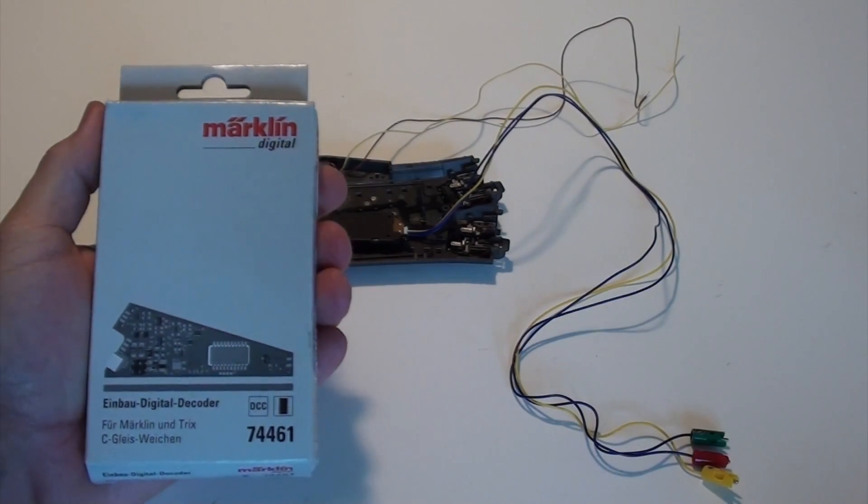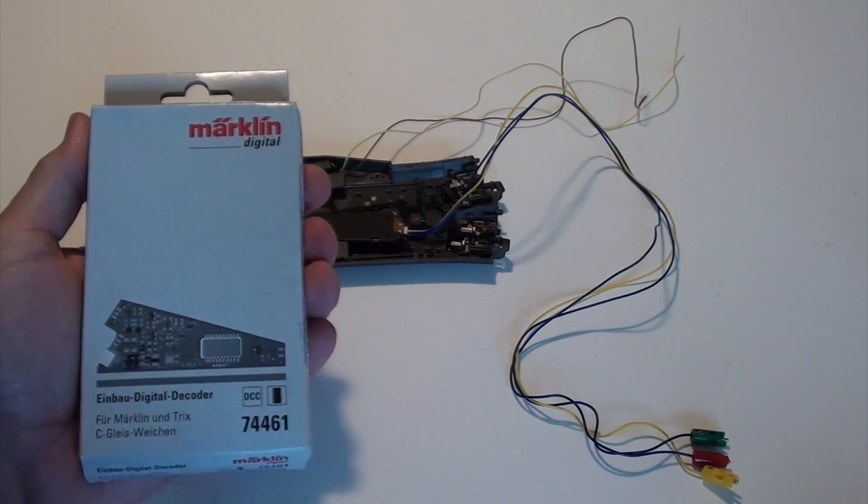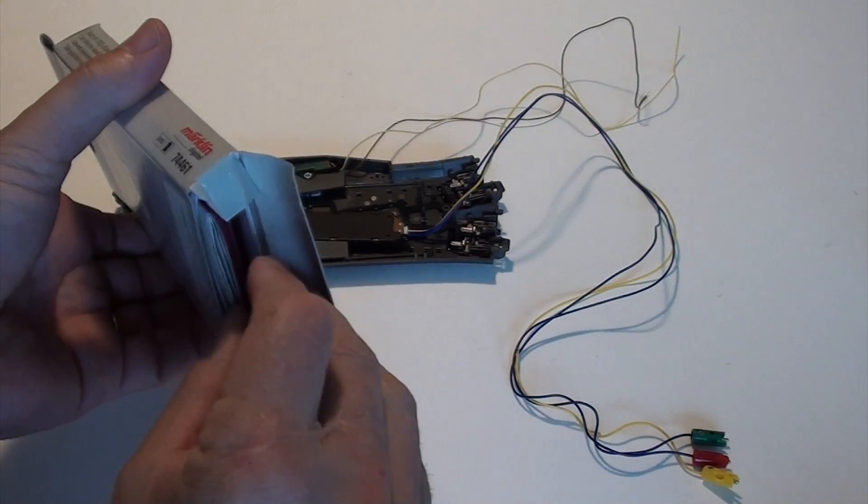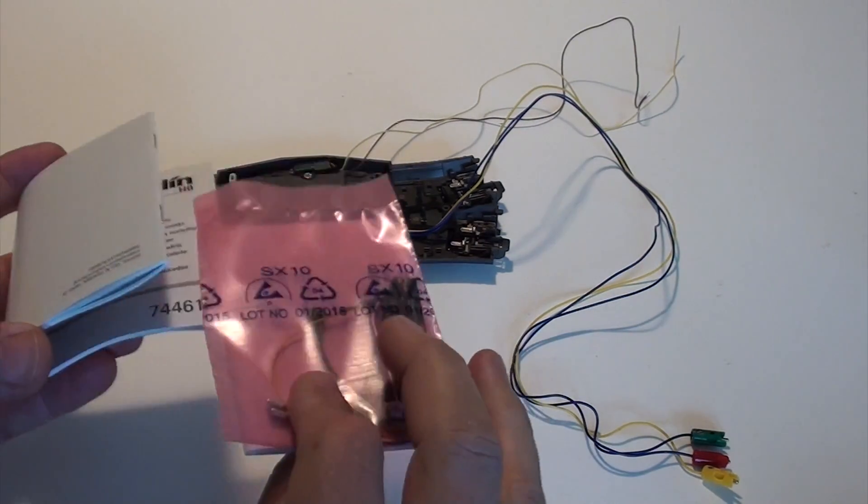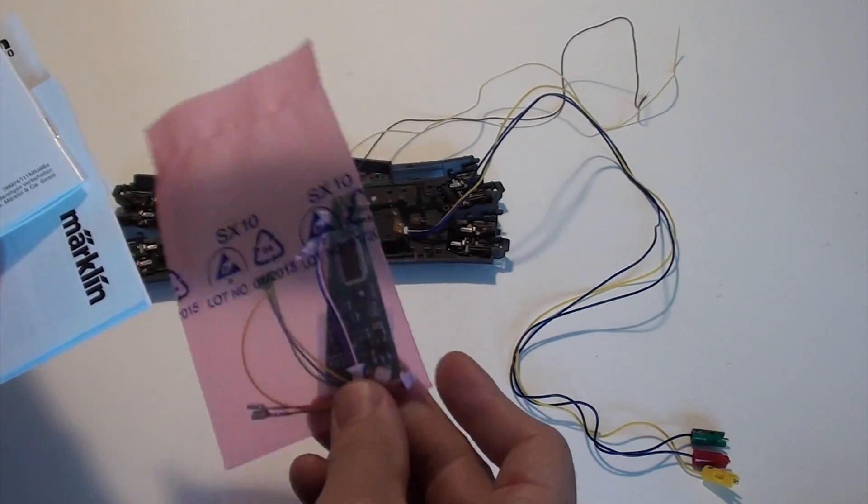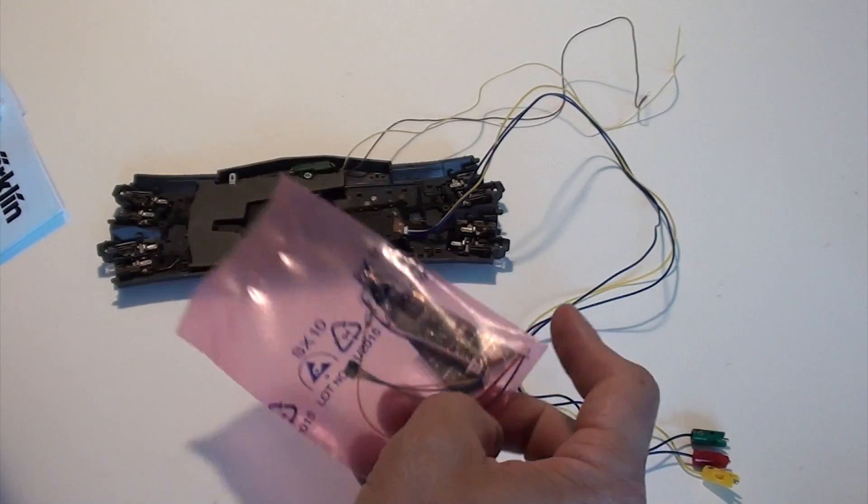The decoder that we will use is the 74461. There is also a 74465 and that decoder is specifically for the three-way turnout and can control two turnout motors. But for every normal turnout and a crossing we will use the 74461.